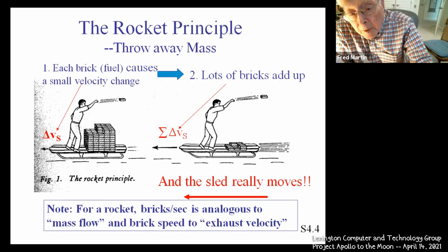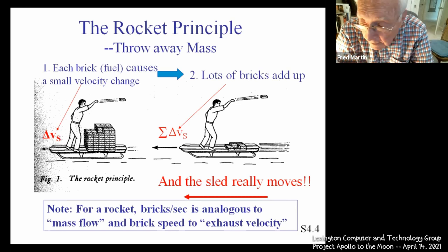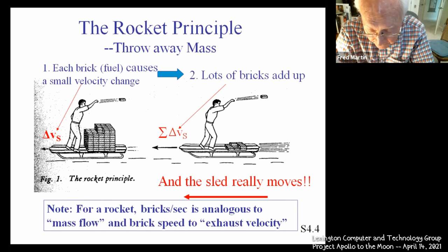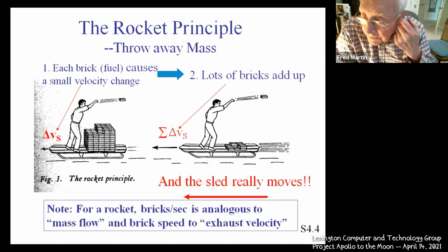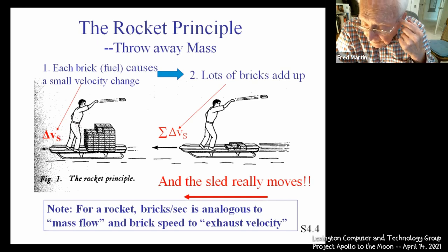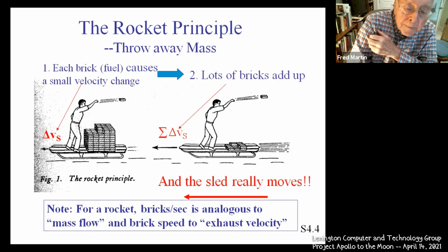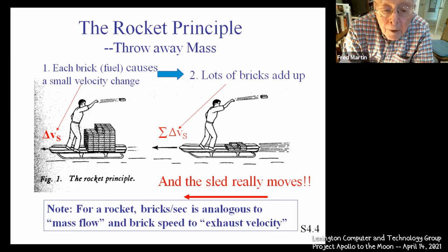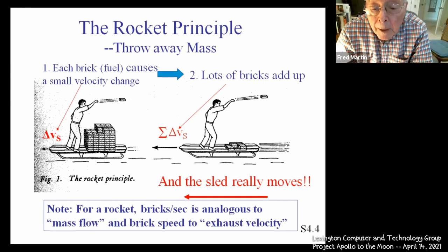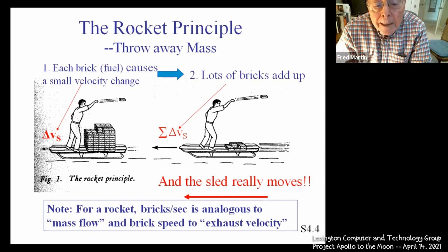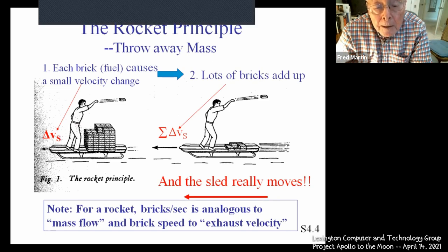Depending upon the kind of fuel you use, the efficiency of the rocket, and so on, you get the thrust that you're interested in. For example, on the pad at Cape Kennedy, you had a six-plus million pound rocket, and a seven-and-a-half million pound thrust was created by throwing mass out the back end that would lift the rocket up.